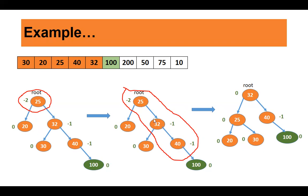This is a left-left rotation. 32 will be the new root, 25 will be the left child, and 40 will be the right child. 30 will be the right child of 25. So 32 is the new root, 25 is the left child, 40 is the right child, 100 remains at its position, 30 is the right child of 25, and 20 remains as the left child of 25. After checking the balance factor, the tree is now balanced with root balance factor 0.